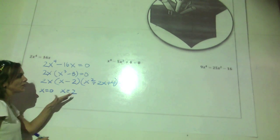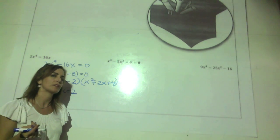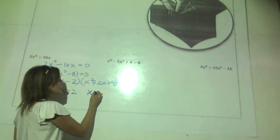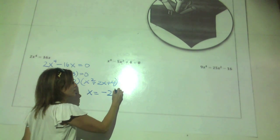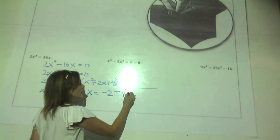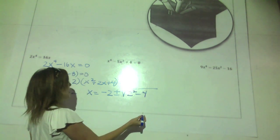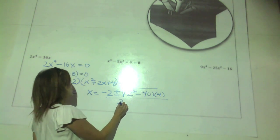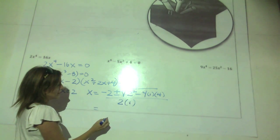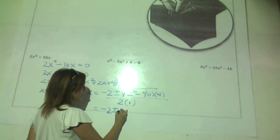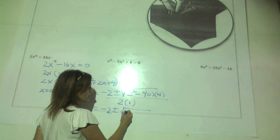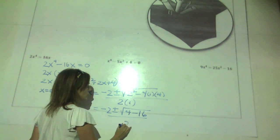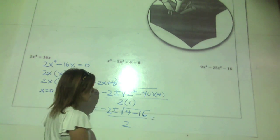Now we have a four-term cubic. The first thing that should come to mind is factor by grouping. Looking at the first two terms, x squared can come out of both, giving x squared times 3x plus 2. For the last two terms, 12x and 8, the GCF is 4. Negative 12x divided by negative 4 is 3x, and negative 8 divided by negative 4 is positive 2, giving negative 4 times 3x plus 2. So 3x plus 2 equals zero.